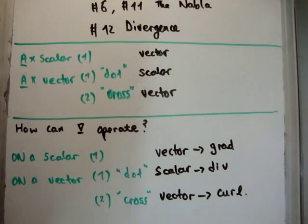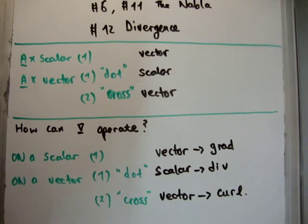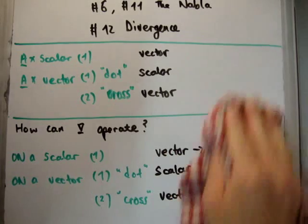And we call each of these three operations something different. We call the first one the gradient, the second one the divergence, and the final one which I'm going to discuss now we call the curl. And we'll see later on why that is the case.